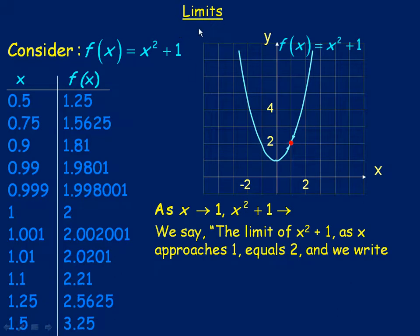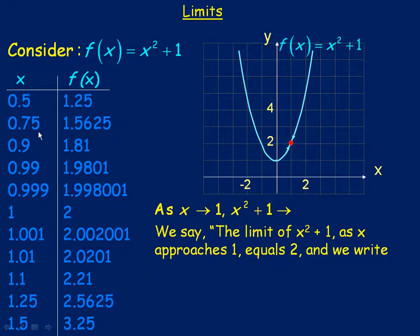In this lesson we'll take a look at the concept of limits, and I'm going to use this parabola f of x equals x squared plus 1. We're focusing on this red dot here, the point where x is 1 — it's actually the point (1, 2). The table on the left starts at the top with x values below 1: 0.5, 0.75.